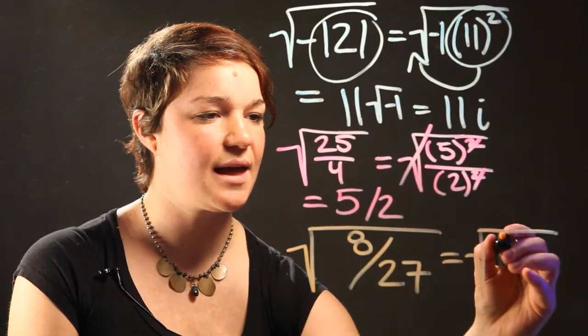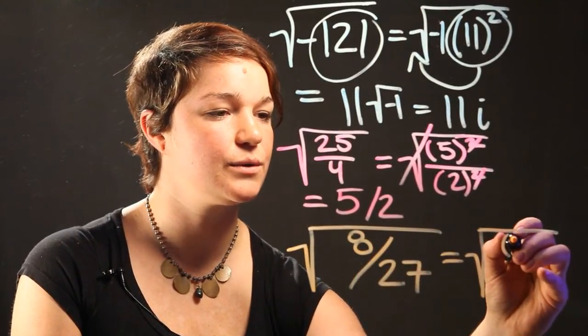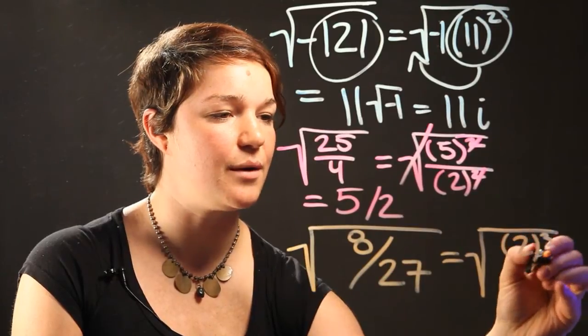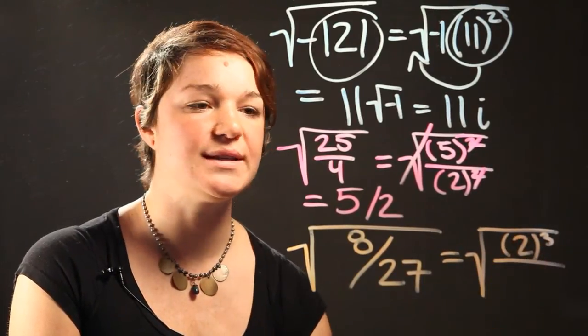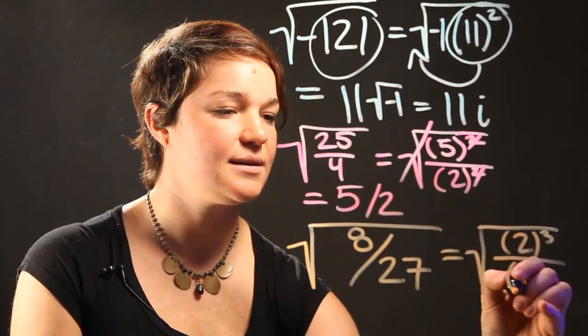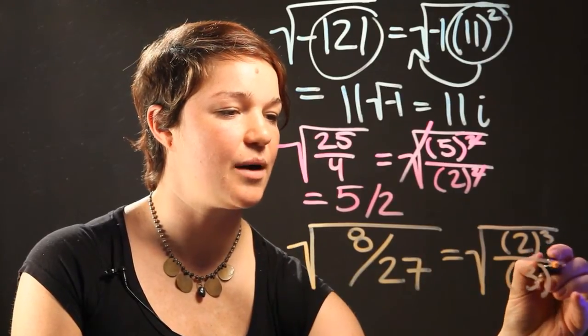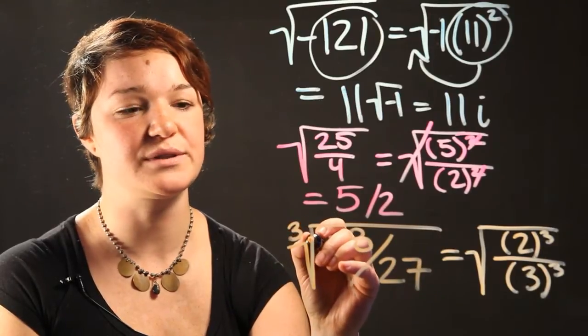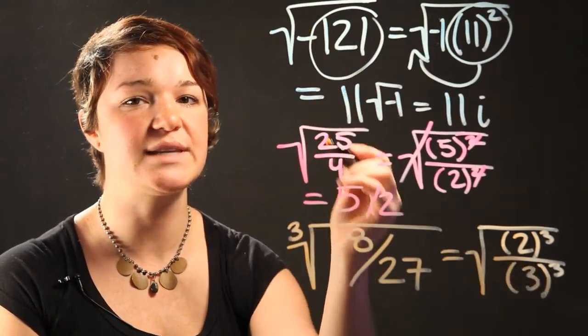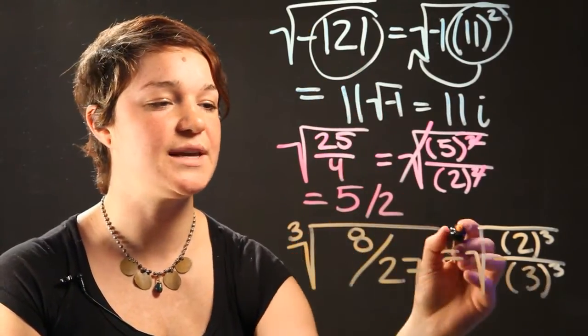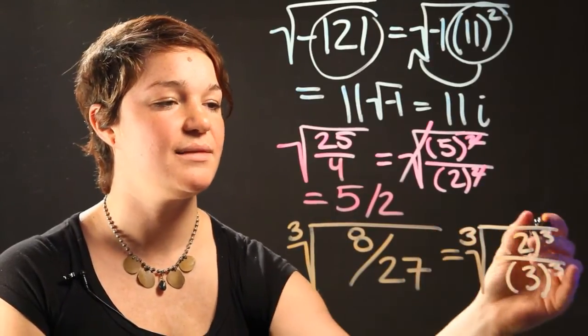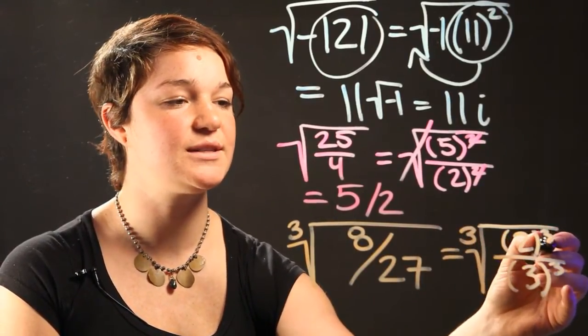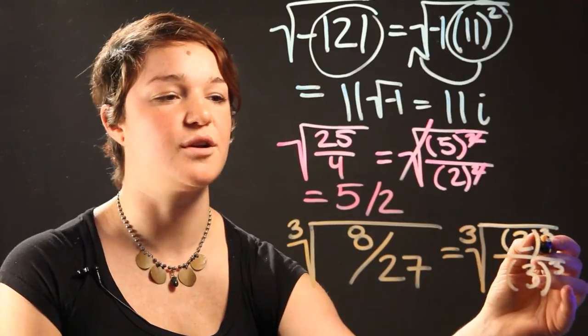So we're going to take the 8 and convert it to 2 to the third power. And we know that 27 is 3 to the third power. I forgot to put that this is the cubic root. So before we were taking the square root, now we're taking the cubic root.